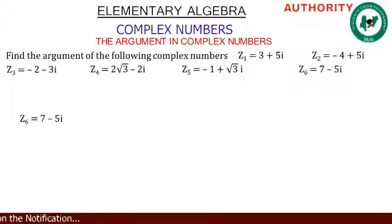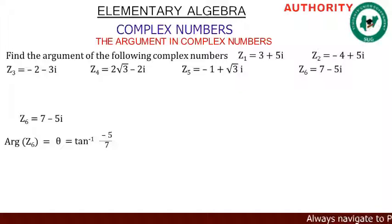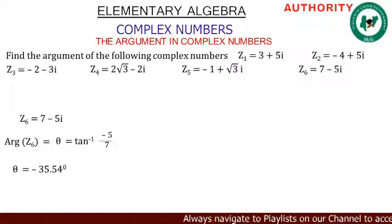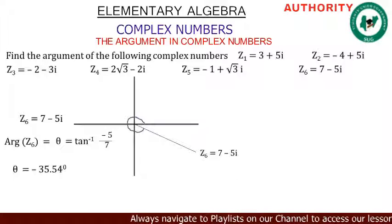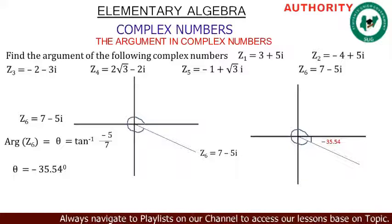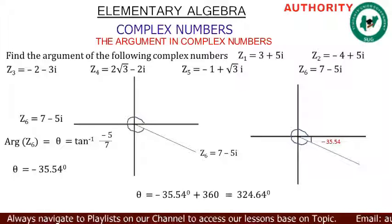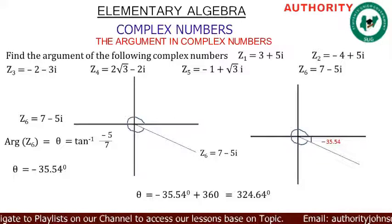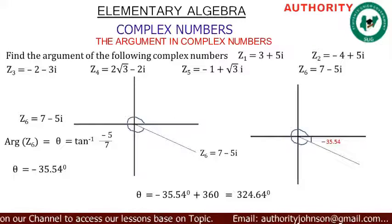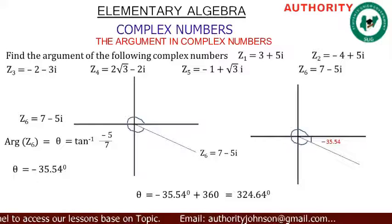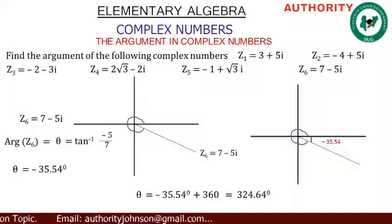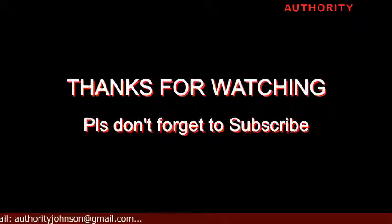For z6 = 7 - 5i: arg(z6) = θ = tan⁻¹(-5/7) = -35.54°. On the diagram it's also negative, so we add 360°: -35.54° + 360° = 324.46°. That is the true corresponding argument. Thank you very much.